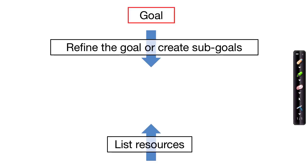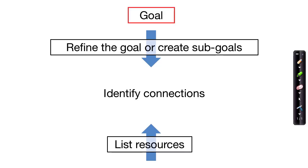Let's get an idea of what a brain swarming diagram looks like when it's complete. The final diagram should include the overall goal at the top. As we move downward on the diagram, we can refine the goal by thinking of actual steps towards that goal, and we can further refine these sub-goals as we work down. As we move up from the bottom of the diagram, we list resources. And as we find sub-goals that require resources available to us, we can connect these to identify connections and come up with new brainstormed solutions.